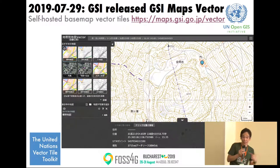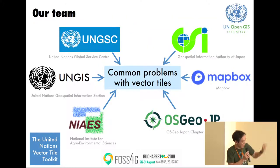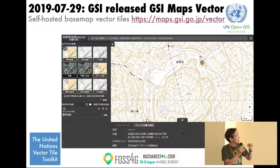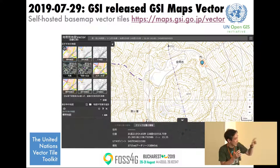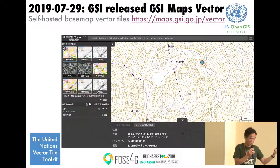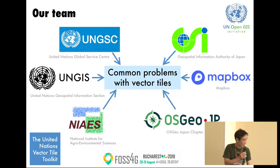The United Nations Secretariat and GSI, the National Mapping Agency of Japan, share a lot of knowledge. We have produced vector tiles for the UN Secretariat, and from the National Mapping Agency of Japan we started vector tiles from the end of July. The classic topographic map is now in Mapbox Vector Tiles specification, and we are doing experiments with these new services. This knowledge will be shared within these teams so we can contribute to better UN operations.